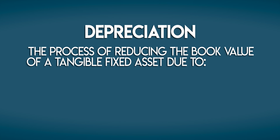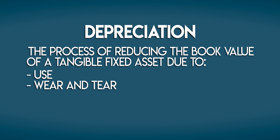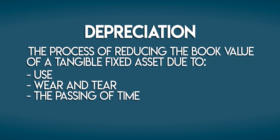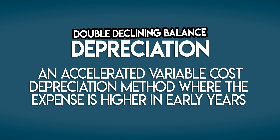Depreciation is the process of reducing the book value of a tangible fixed asset due to use, wear and tear, the passing of time or obsolescence. Double declining balance depreciation is an accelerated variable cost depreciation method where the expense is higher in early years.